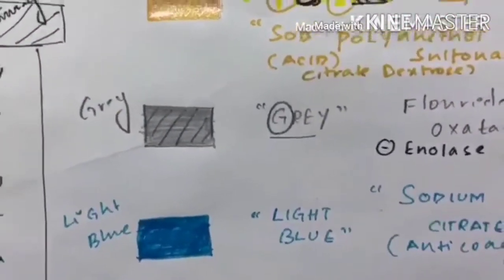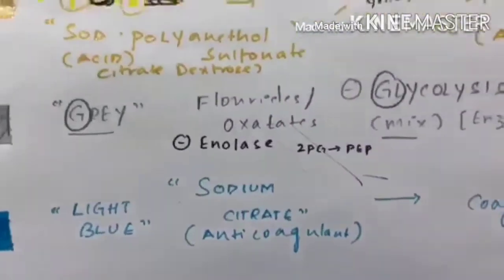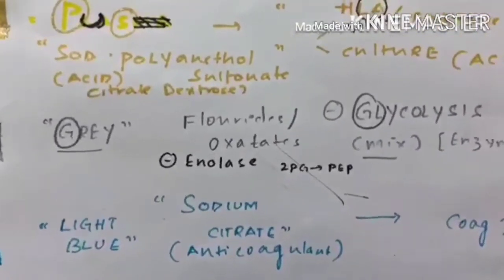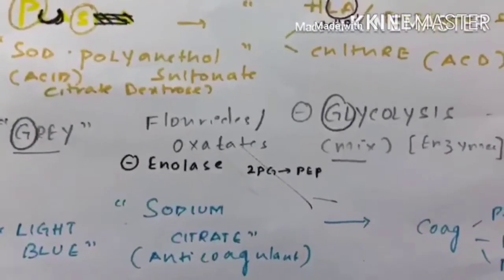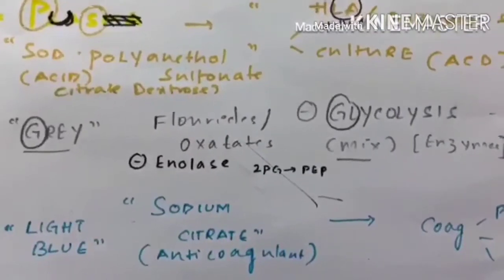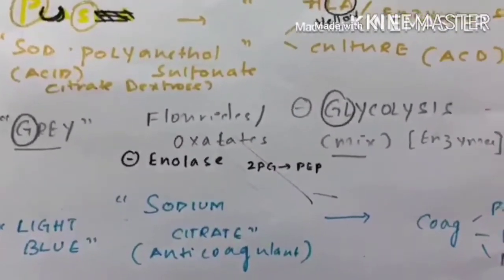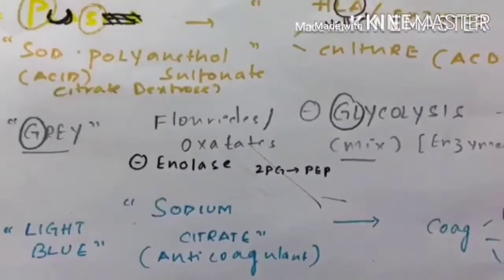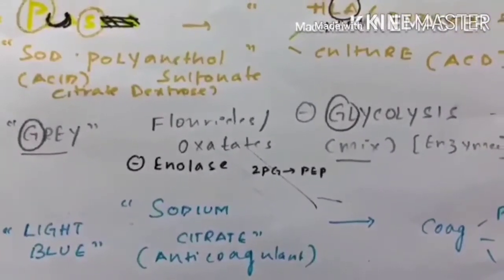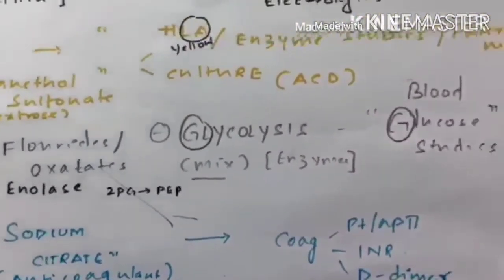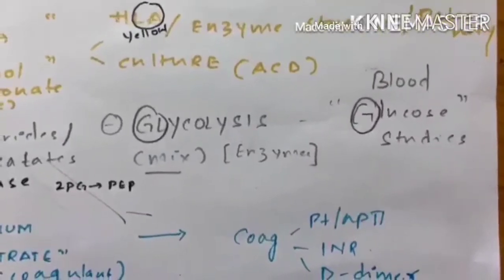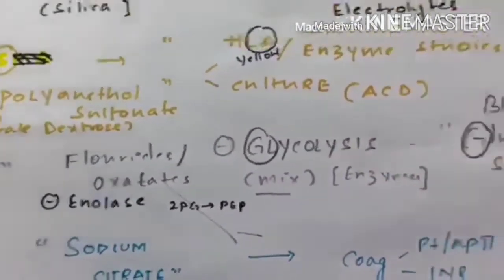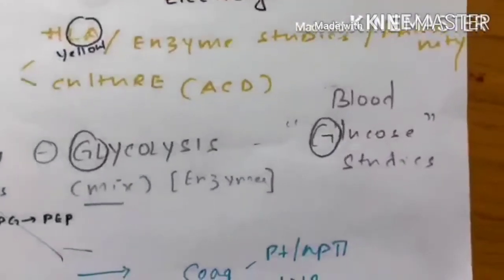Next coming to grey bottle. Grey bottle contains fluorides or oxalates, especially sodium fluoride. If we go back and remember glycolysis, this is the 9th step where 2-phosphoglycerate is converted into phosphoenol pyruvate using the enzyme enolase. The inhibitor of this enzyme is sodium fluoride. So if we add sodium fluoride it inhibits glycolysis. We can study glucose without glucose being converted into pyruvate. Grey bottle contains sodium fluoride, inhibits glycolysis, used for studying blood glucose.